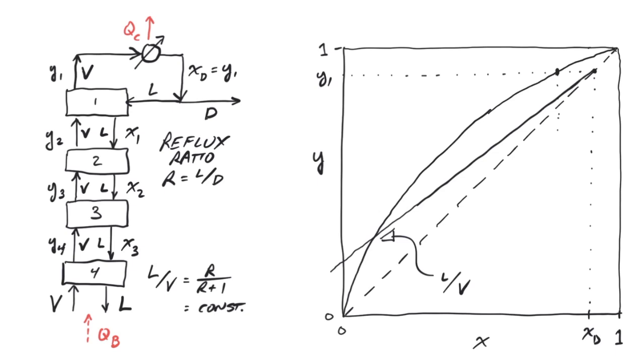Moving to the left, we can find a point on the equilibrium line corresponding to equilibrium on stage i, which gives us the concentration, x1, of the liquid exiting stage i. Using the operating line, we can then determine the gas concentration, y2, entering stage i. Using the equilibrium line again, we can determine the concentration, x2, of the liquid exiting stage II, which in turn allows us to predict the gas concentration, y3, entering stage II, etc.